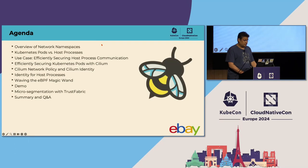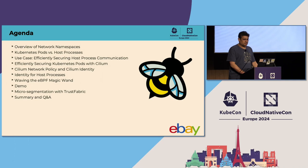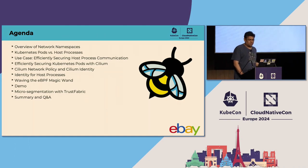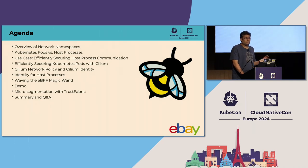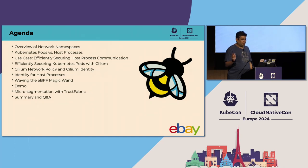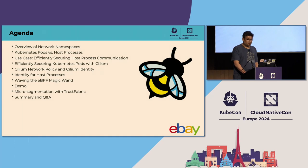The agenda for today: we start with an overview of what network namespaces are and understand the difference between host processes and processes running in Kubernetes pods. We'll cover our use case of efficiently securing host network process communication, look at how host processes are secured today, review Cilium identities and network policies, see how Cilium uses BPF to enforce policies for regular pod traffic, then look at assigning identities to host processes, wave that eBPF magic wand in the kernel data path, see a demo, touch upon eBay's TrustFabric solution, and then open the floor for questions.